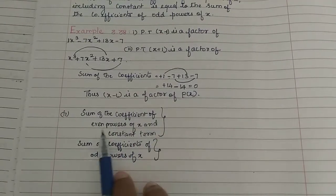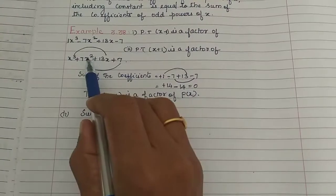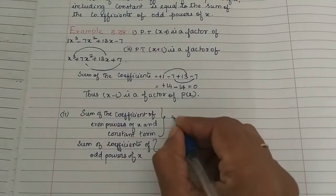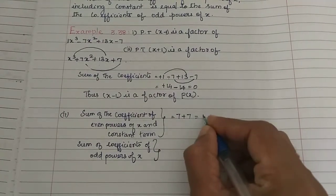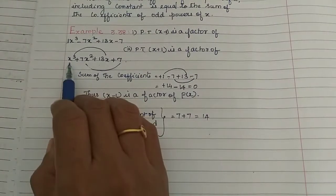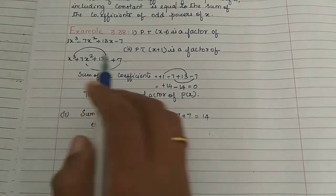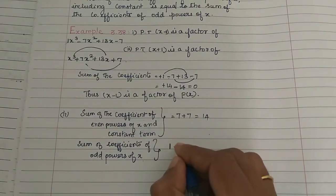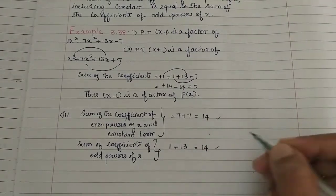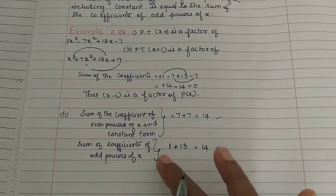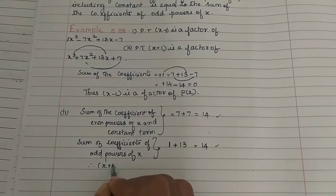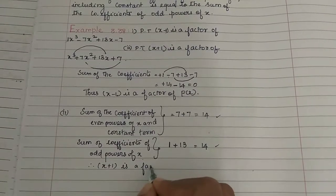The sum of the coefficients of even powers of x and the constant: the even power is x², with coefficient 7, plus the constant 7 — giving 14. The sum of the coefficients of odd powers of x: odd powers are x³ and x. The coefficient of x³ is 1 and the coefficient of x is 13, so 1 plus 13 is 14. These two sums are equal, so x plus 1 is a factor of the given polynomial. Therefore, x plus 1 is a factor of p of x.